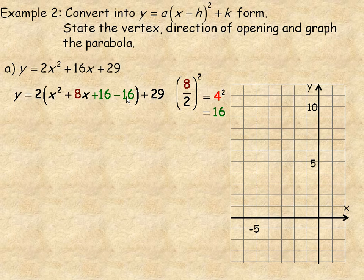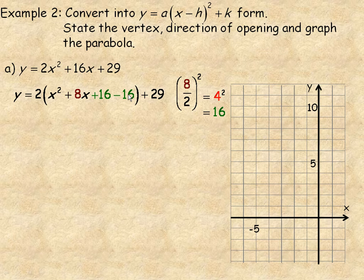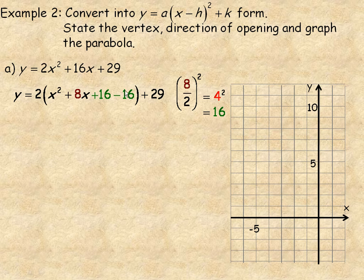Adding 16 and subtracting 16 is really adding 0, so I haven't changed the value of this. It still is equivalent to the original 2x² + 16x + 29, but it's in a different form. I'm going to want to factor x² + 8x + 16 very shortly, but before I do that, I want to take that negative 16 and move it outside of those parentheses.